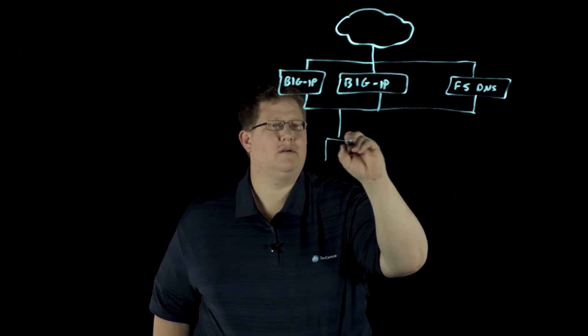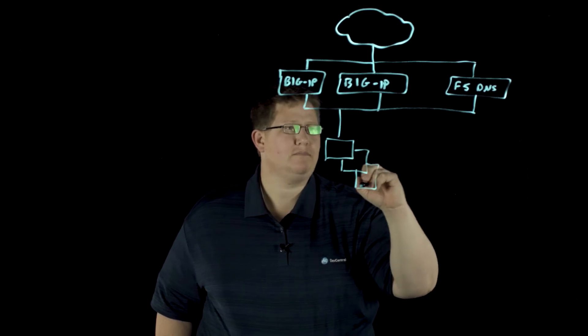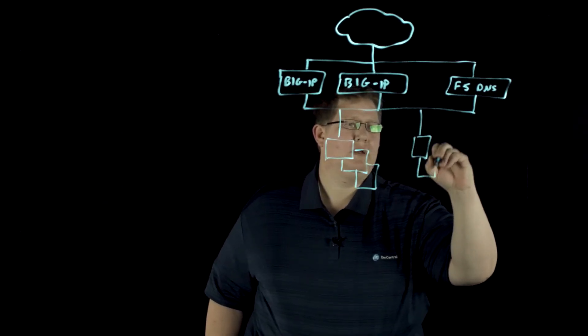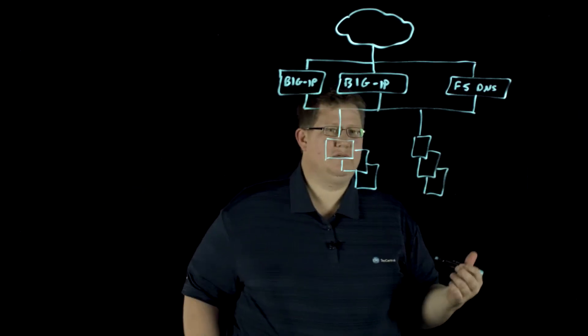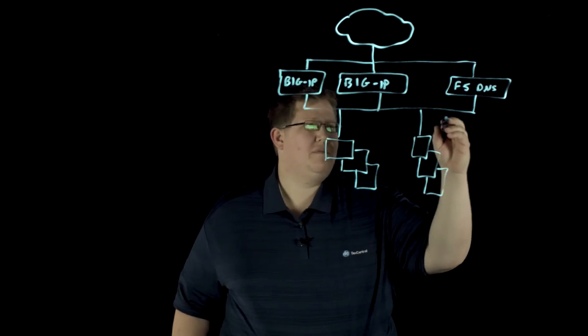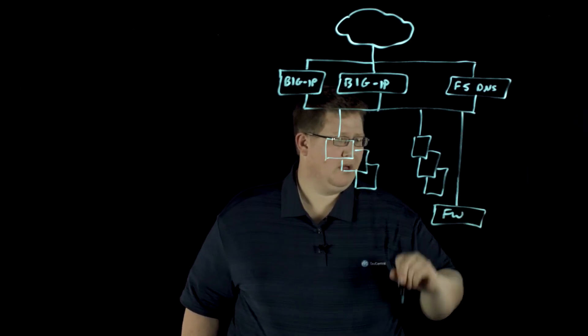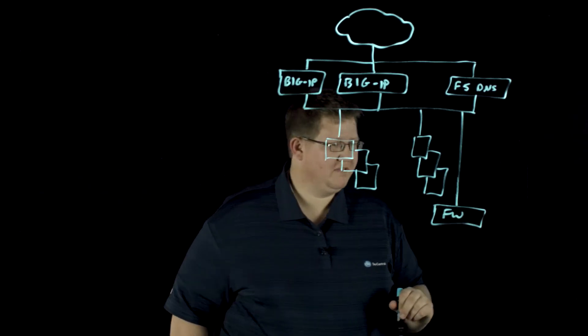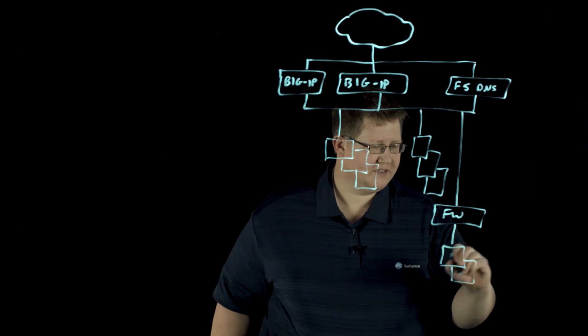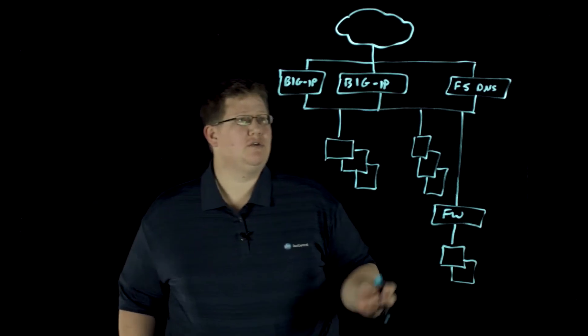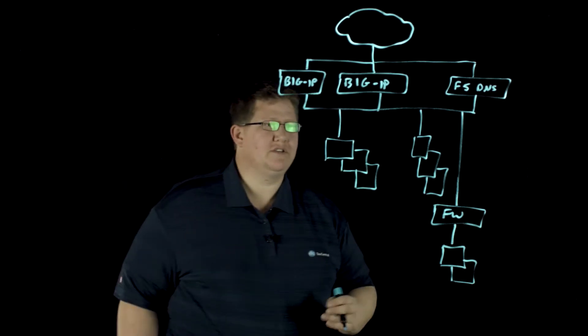And then you have another layer where you have maybe some web servers, and then maybe you have some other servers that are handling other types of traffic. And then from that layer, you then have an internal firewall. Maybe that's a big IP, maybe it's not. And then inside you have additional services as well. So you kind of have the typical DMZ environment.